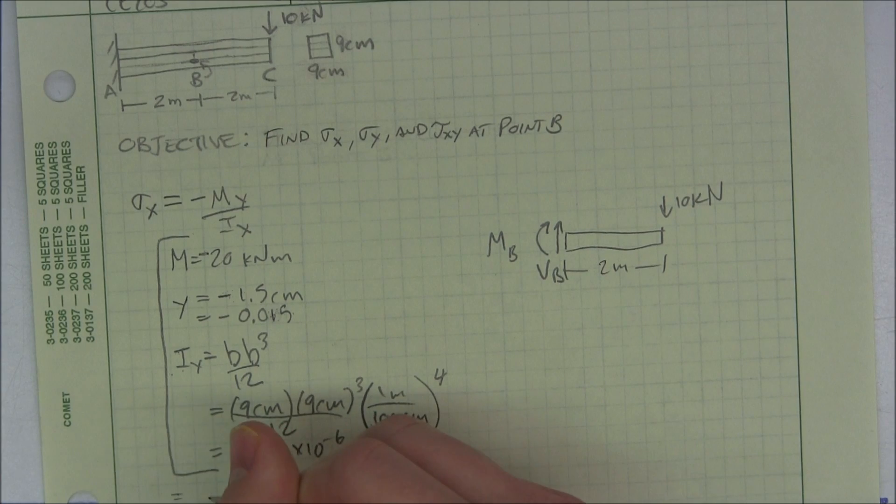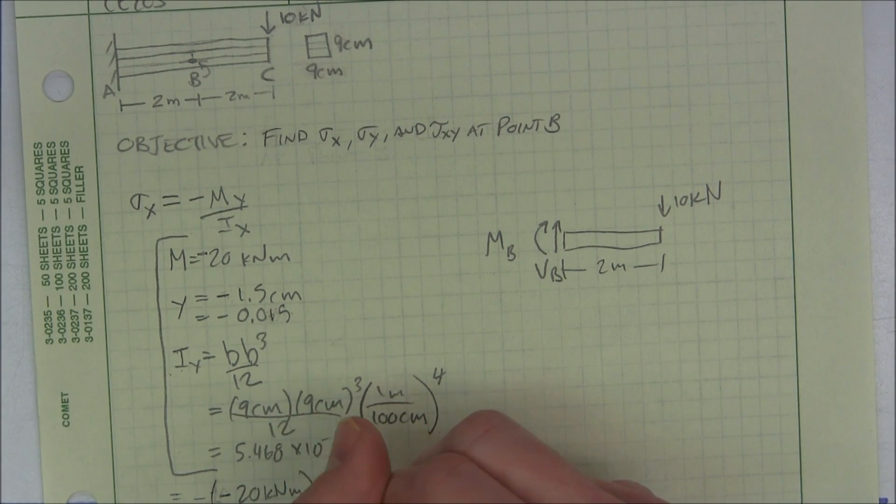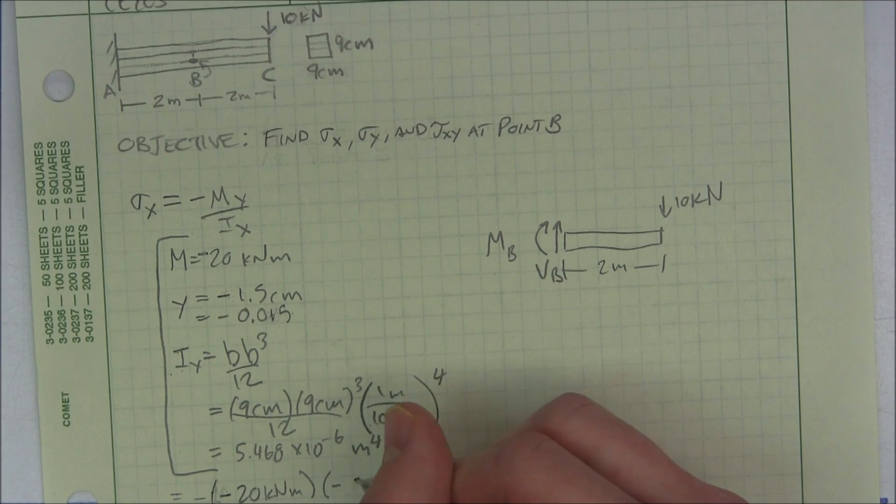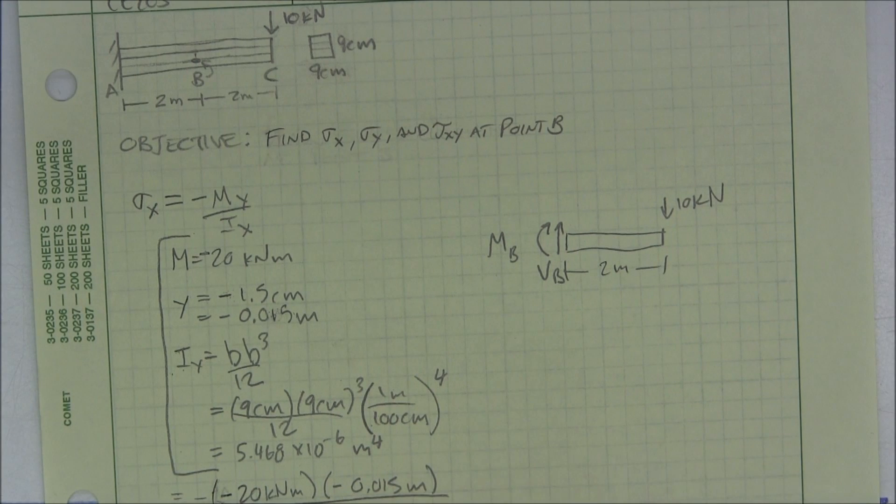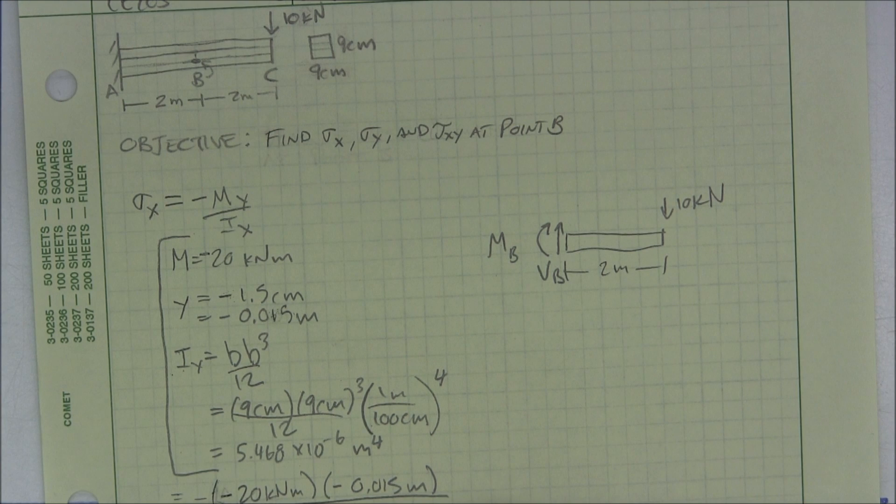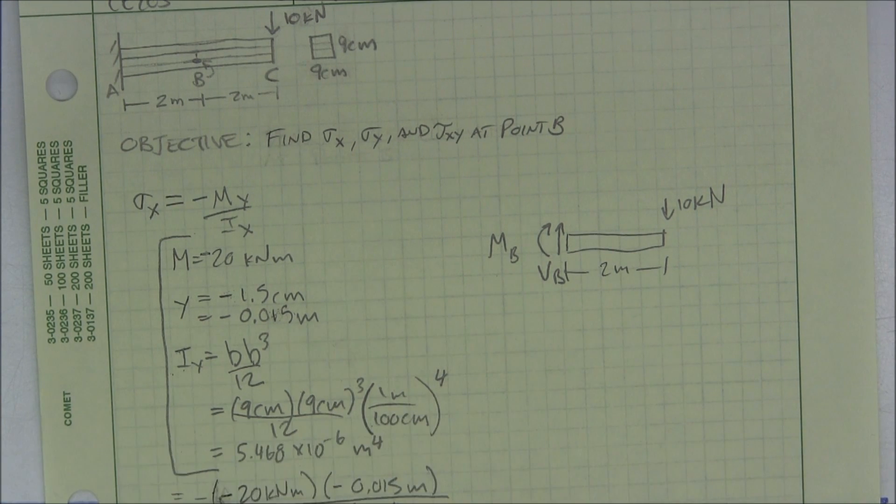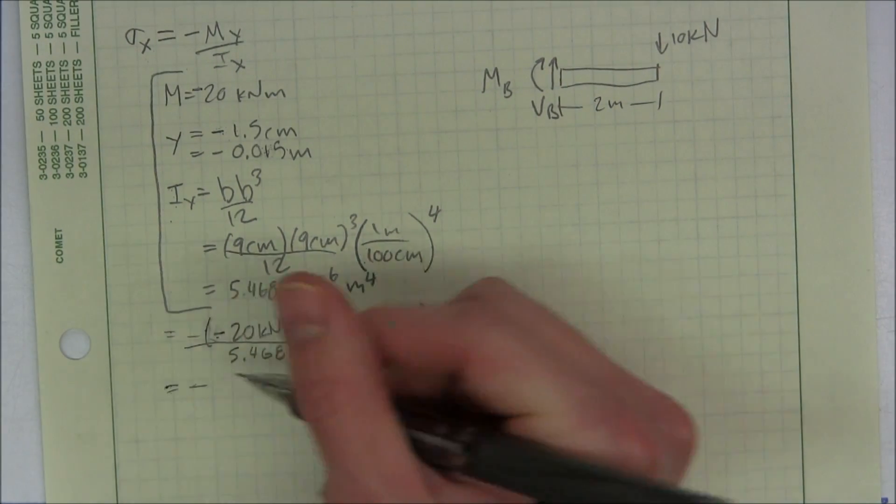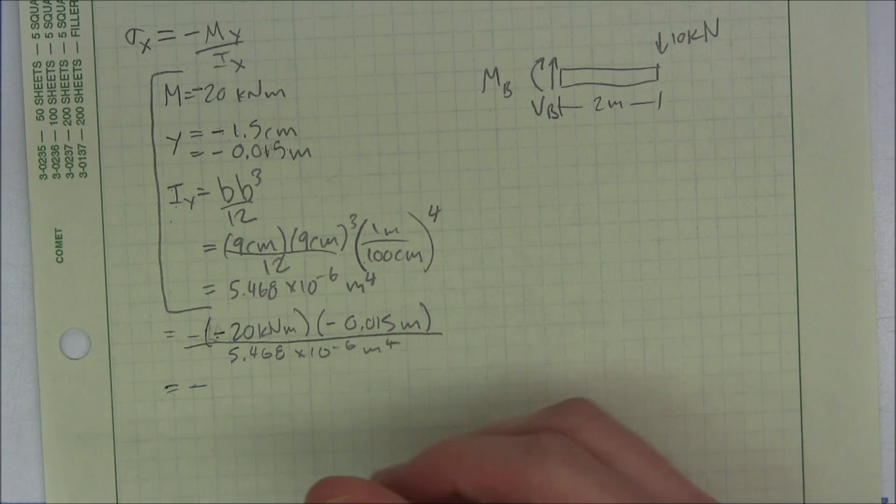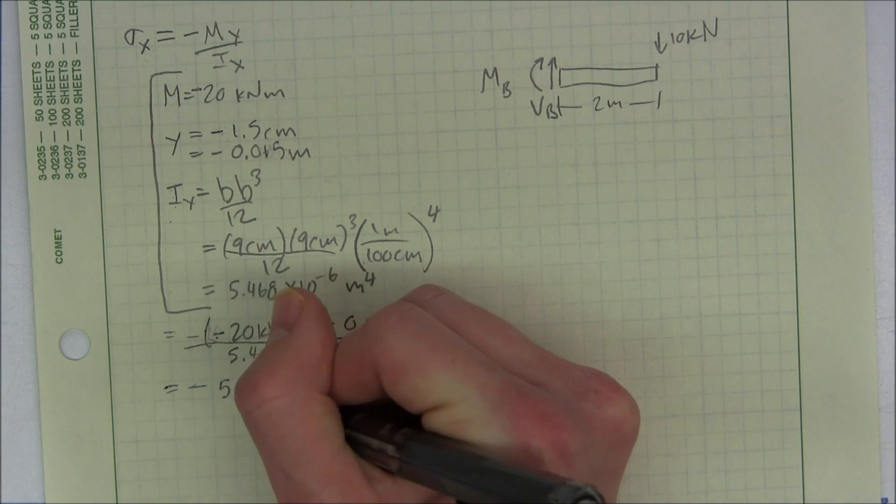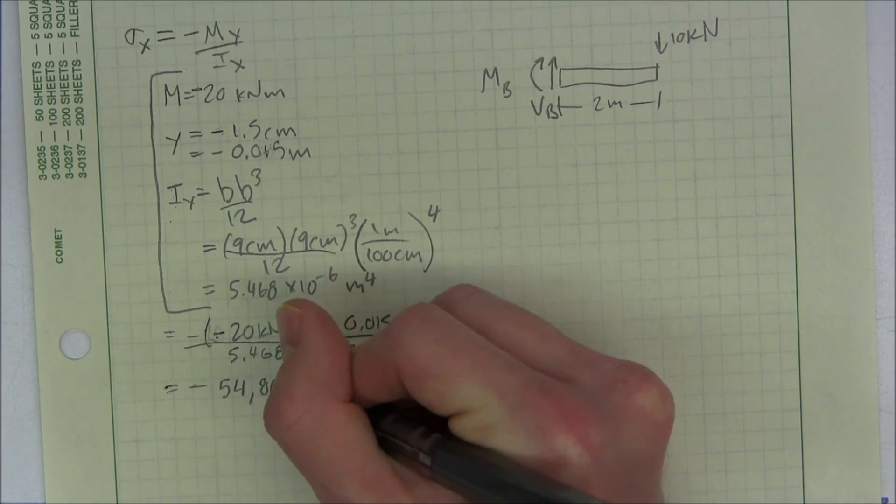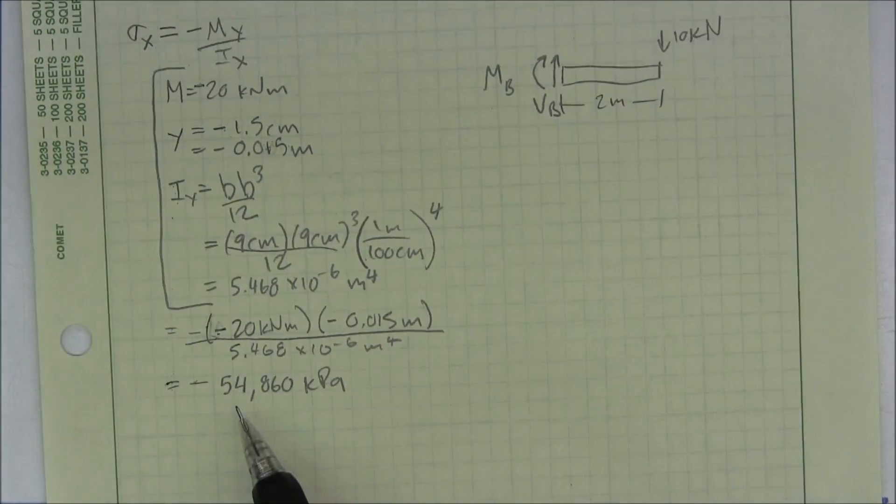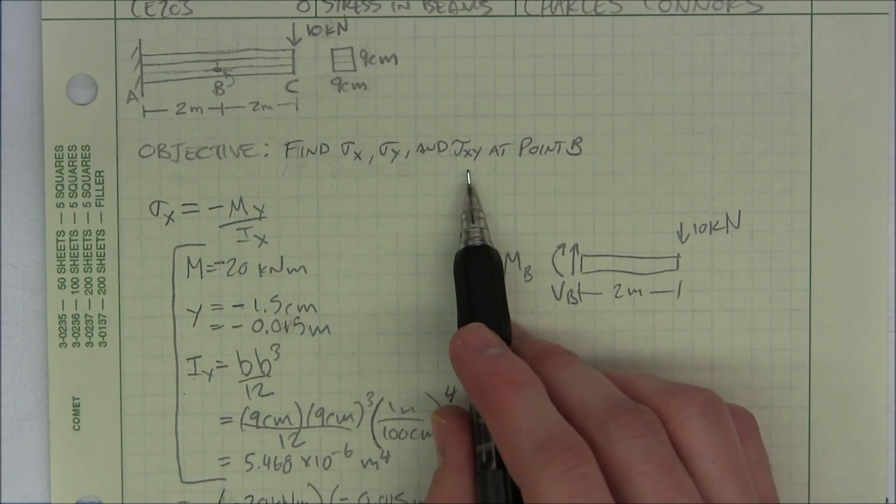So I've calculated everything. Let me plug it in. Negative 20 meters, negative 0.015 meters, and we're getting units all over the place. Divided by 5.468 times 10 to the negative 6 meters to the fourth. We have three negatives multiplied by each other, so that's one negative. And this times this divided by this gets us a number of 54,860 kilopascals. So that gives us the x direction, but we're looking for x, y, and tau xy.